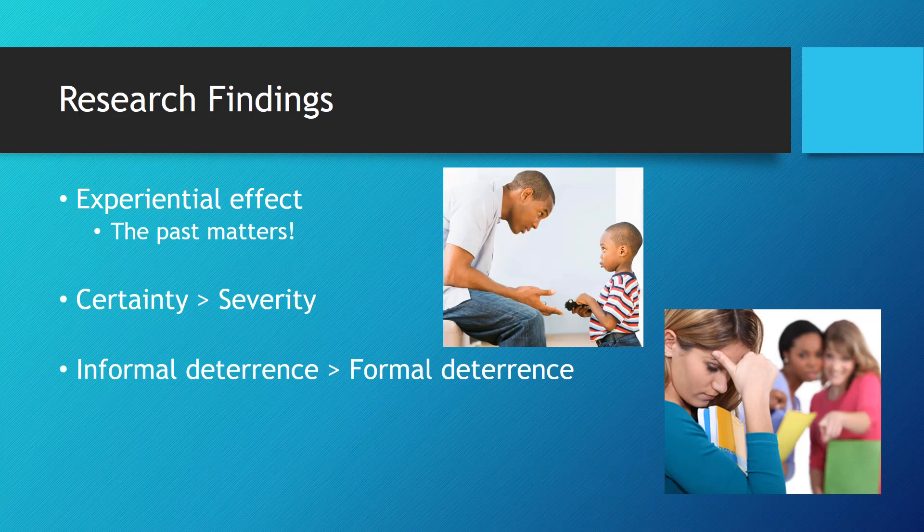What have we learned about deterrence since the early days of Beccaria and Bentham? Several important things have been identified. First, there is an experiential effect on deterrence, meaning people's perceptions of punishment will change based on their previous behaviors. Consider drunk driving: most drunk drivers drive drunk frequently before they are caught. The CDC found that people drive an average of 80 trips while impaired before being arrested. Because of that, people considering driving drunk are unlikely to see the punishment as certain, and thus the deterrence effect of any penalty is not very high. The same holds true with white-collar offending — tax fraud has a low identification and prosecution rate, so someone who has been cheating on taxes is likely to continue regardless of the penalty, because they perceive the chances of getting caught as low.